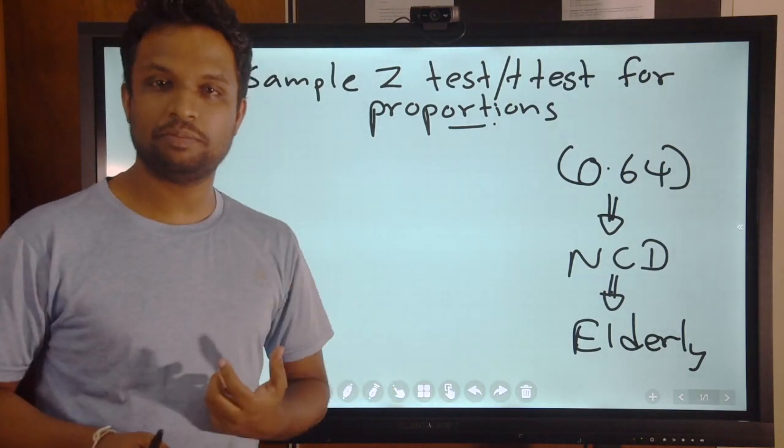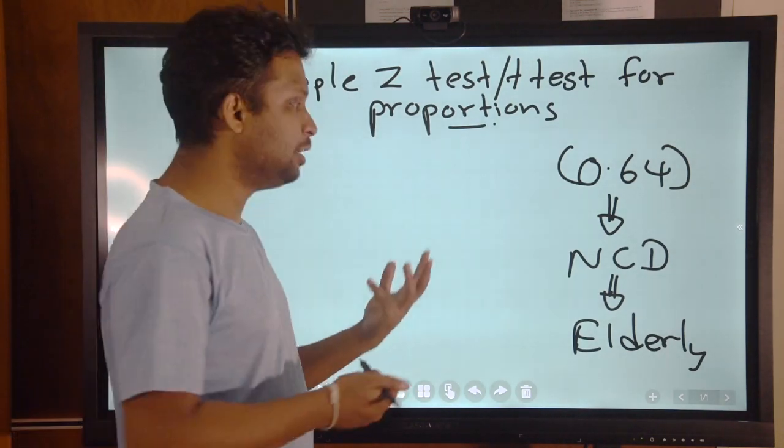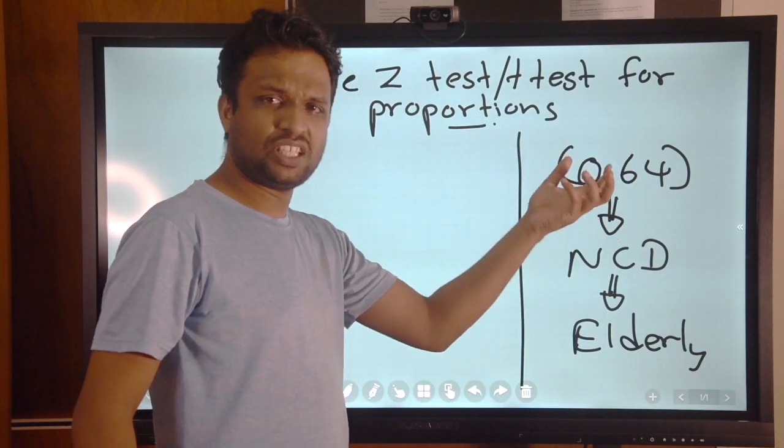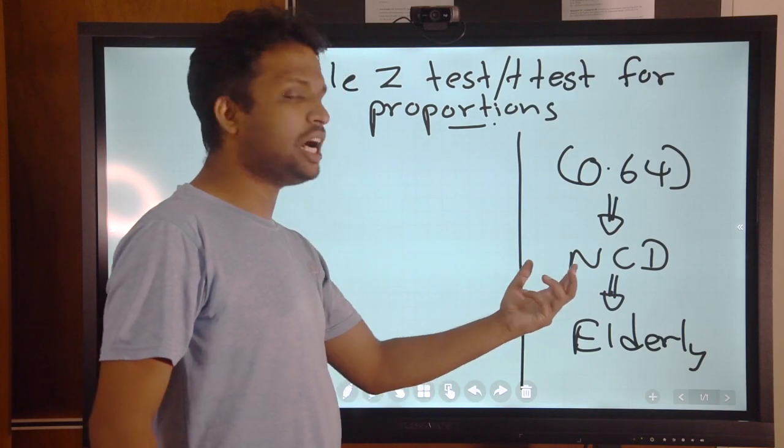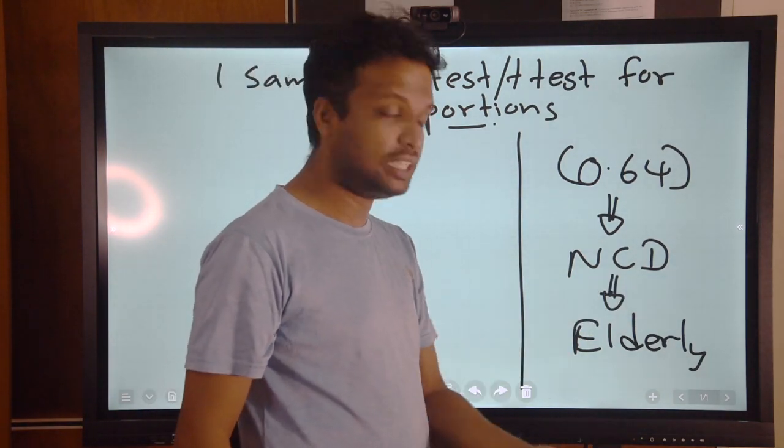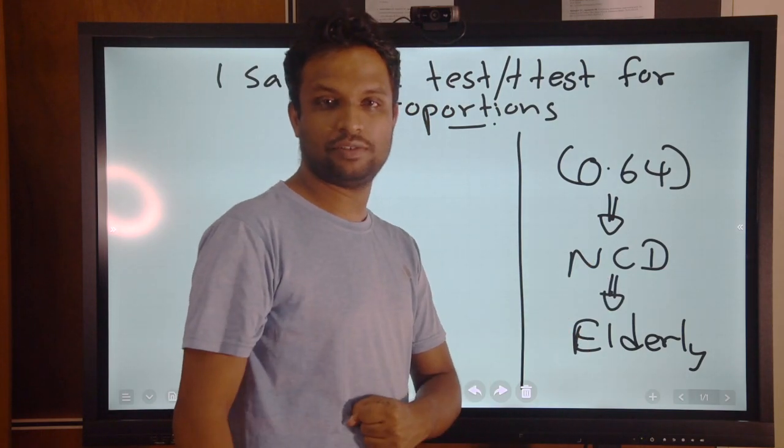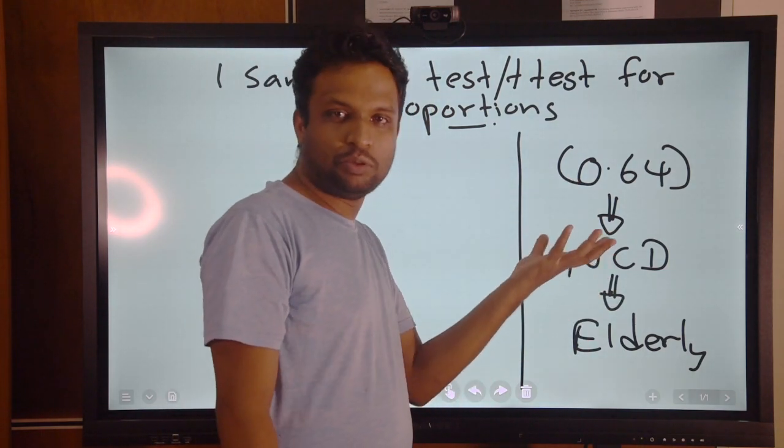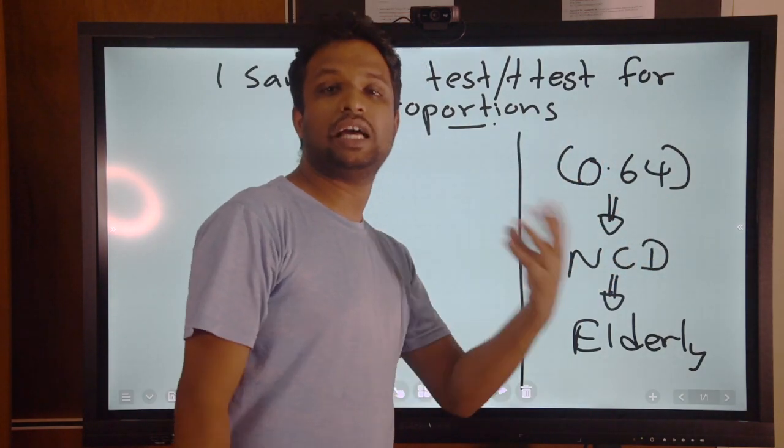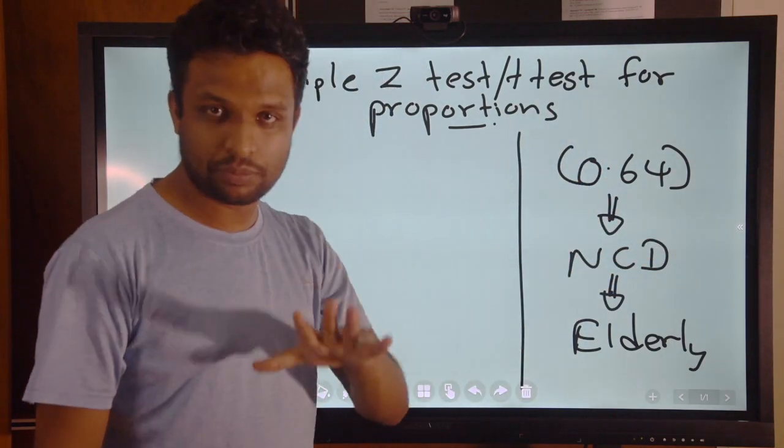We will start with an example. Assume that generally in a population, a proportion of 0.64 or 64 percent of the people are having some kind of NCD or non-communicable disease in elderly population. This is like a fixed value. About 64 percent of them have some kind of disease, either diabetes, hypertension, or some other disease.